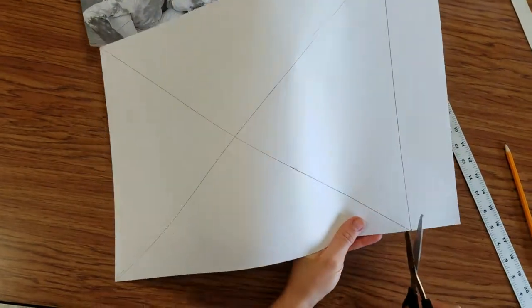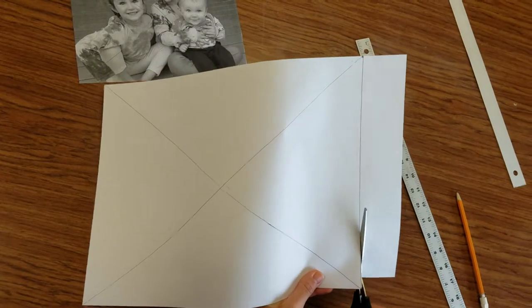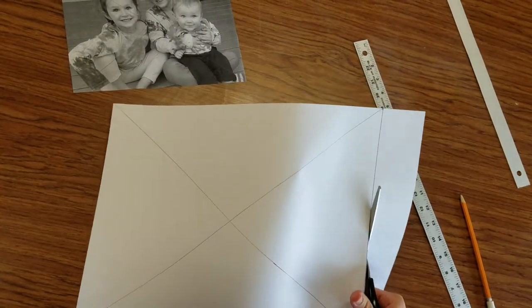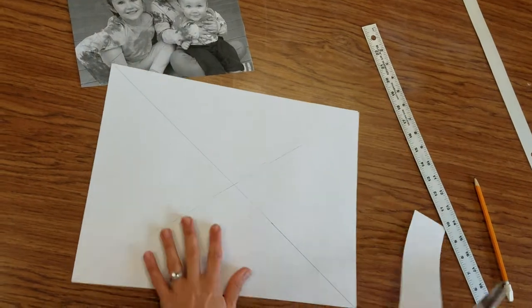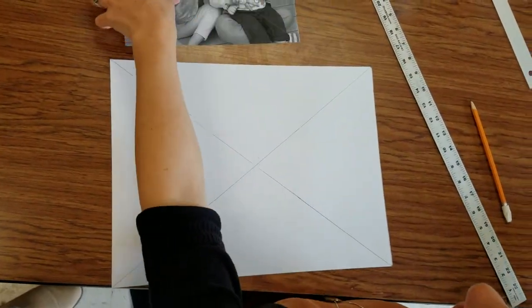Now you probably want to use a paper cutter to get a straighter cut. But you can take this extra paper off. And now the proportion of your drawing paper and the proportion of your photograph are the same.